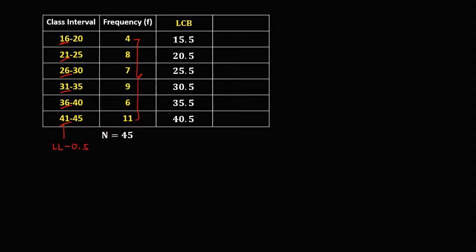Then for the last column, the less than cumulative frequency. To find the value, write first the frequency of the first class, that's 4. Then do the running sum: 4 plus 8 is 12, then 12 plus 7 is 19, then 19 plus 9 is 28, then 28 plus 6 is 34, then 34 plus 11 is 45. The last number of the cumulative frequency must be equal to the total frequency.